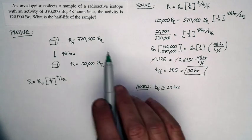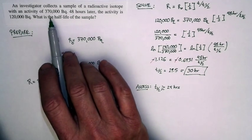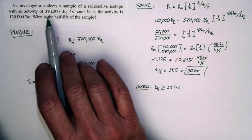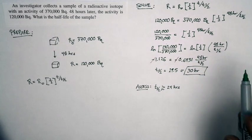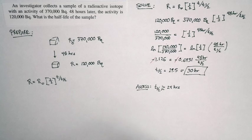If the half-life is 30 hours, after 60 hours, it'll decay to one-fourth of its original activity. And so it's going to be just over 90,000. So it sounds like everything works out exactly as planned. Our final result matches our expectations of how the world works.